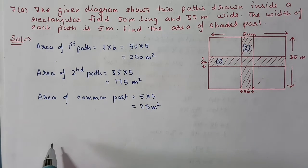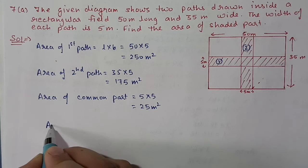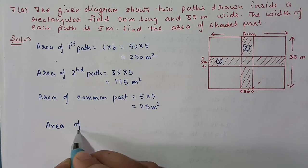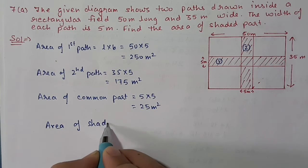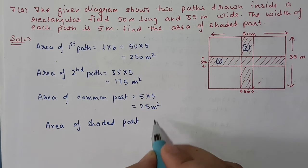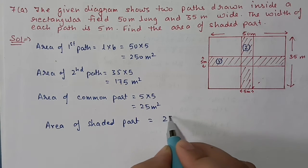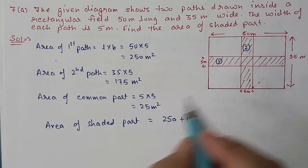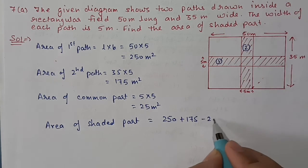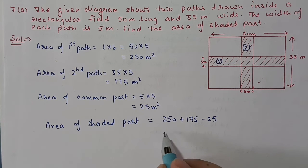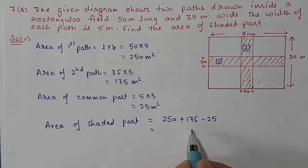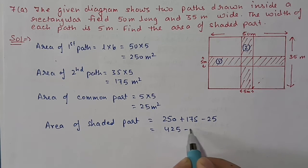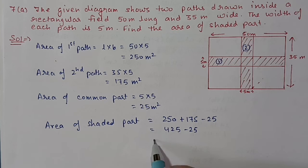So now we can find the area of the shaded part. Area of shaded part equals the sum of both paths minus the common area: 250 plus 175 minus 25. We get 425 minus 25 equals 400 square meters.